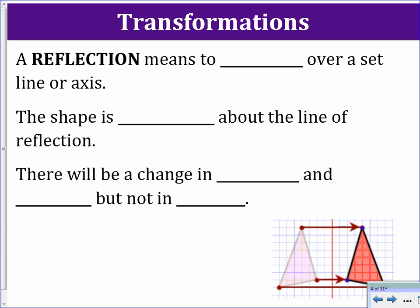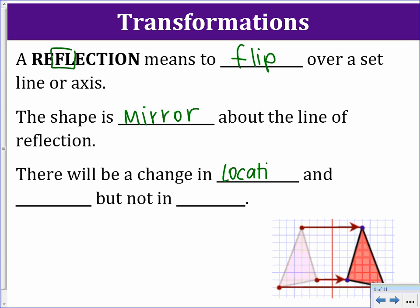A reflection means to flip. When completing a reflection, you flip your figure over a set line or axis — the problem will always tell you what you are flipping over. Think of your shape as a mirror about the line of reflection, so it is the same on both sides. There will be a change in location and orientation, but no change in size or general shape.